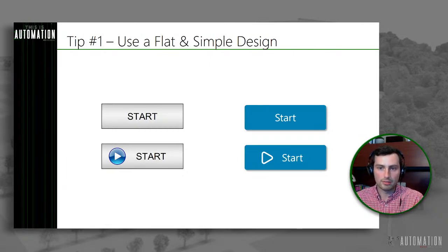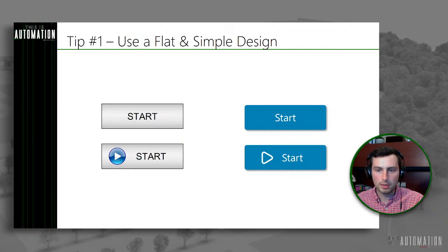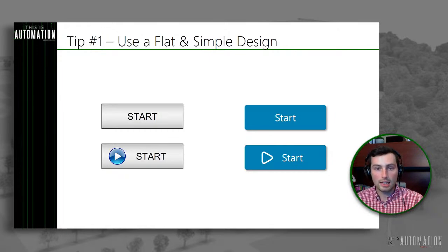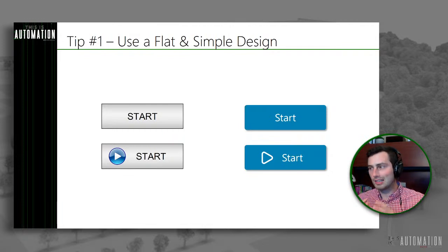Here you can see we're using a standard case for our text instead of all caps. And then in the event that we want to put an image in our button, it's a good idea to use icons instead of bitmaps — it can be a little more modern feeling. Make sure there's consistency in the color palette. And if you have the ability within your platform, adding a little drop shadow, as you can see on the right-hand side, gives some depth to your button. It makes it stand out and makes sure that the user understands this is a button they can press and not just some text surrounded by a blue square. So that's tip number one: use a flat and simple design.